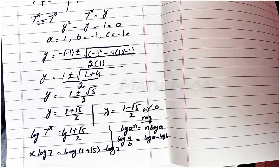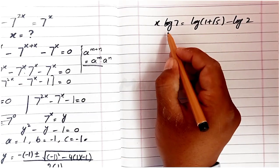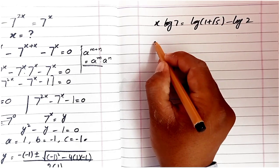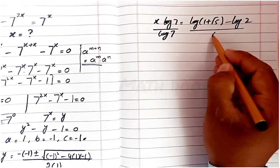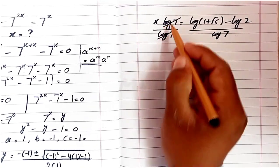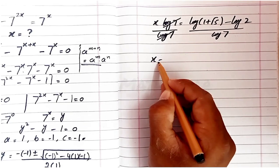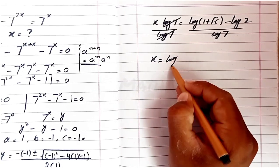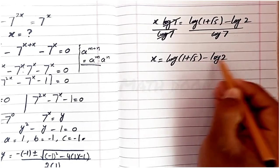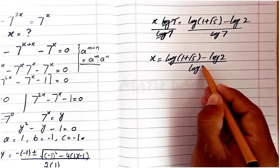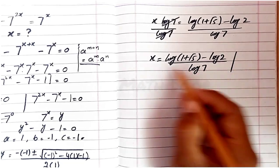To isolate x, we divide both sides by log 7. The log 7 on the left cancels, and our final answer is: x equals (log(1 plus square root of 5) minus log 2) over log 7.